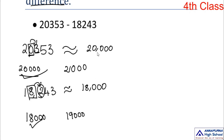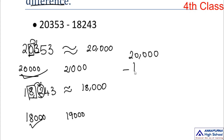Estimate the difference: 20,000 minus 18,000. Without doing the full sum, you can quickly estimate: 20 minus 18 equals 2, so the estimated difference is 2,000. This is very easy to do mentally.